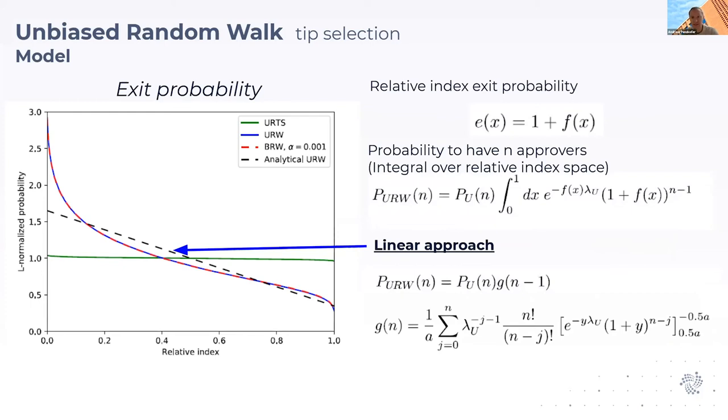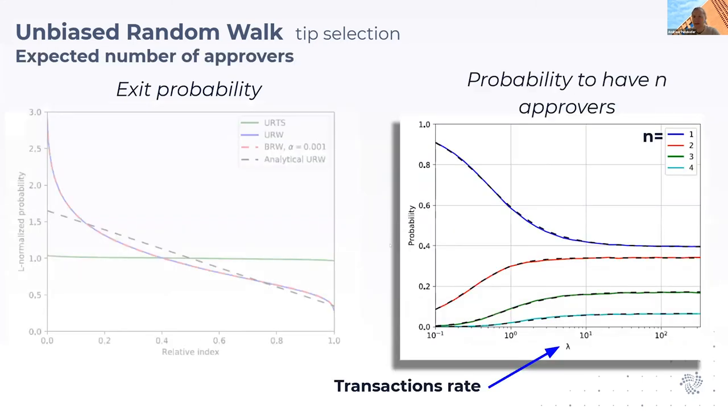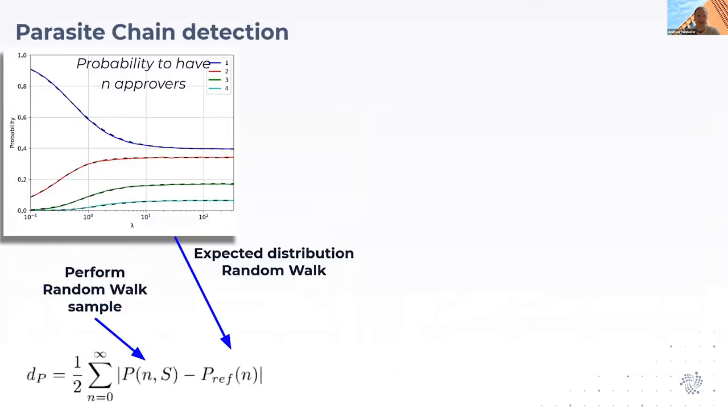We can use this exit probability to derive a probability distribution for the unbiased random walk. As you can see here, it's tightly connected to the uniform random tip selection. It's linear to it plus some integral term, and we can simplify this integral term if we consider a linear approximation, which still works very well in our tests. Again, we find that the probability distribution is very similar to what we expect from our simulations.